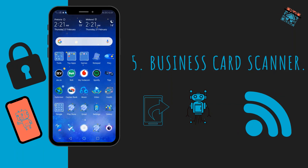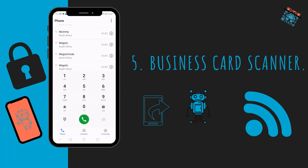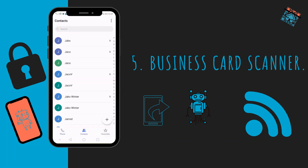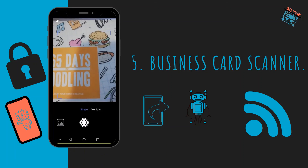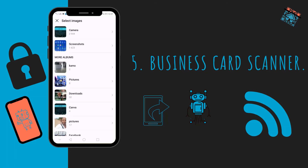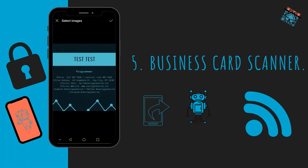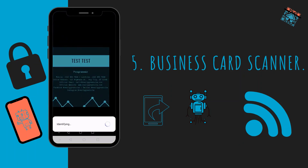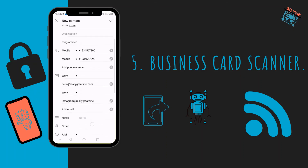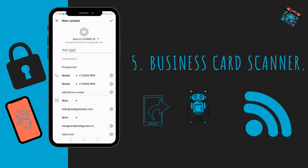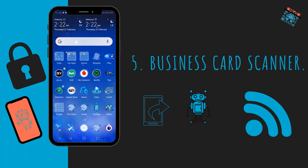The last feature I like is the Business Card Scanner. It's really cool because you don't need a separate paid app. You just go to your contact list, go to options, and scan. I don't have an actual business card so I'll use a screenshot of one — and there you go. It picks up a lot of the information. It might not be 100% accurate, but it gets a lot. Those are five really cool features I like on the Huawei P20 Lite — check them out, and thanks for watching!